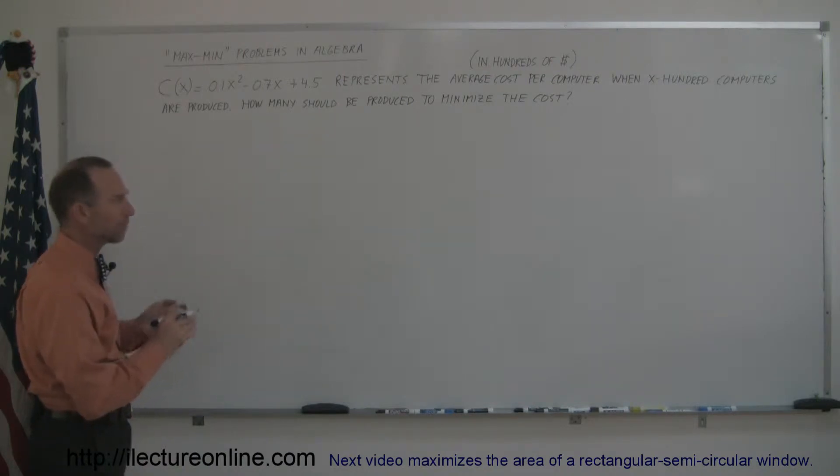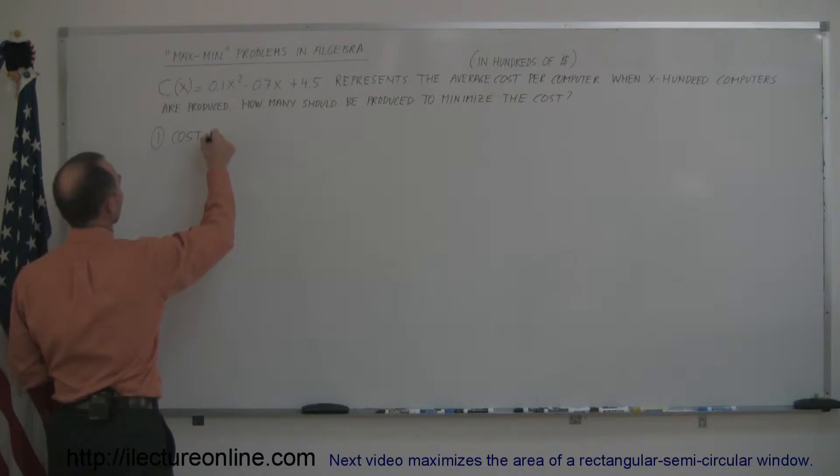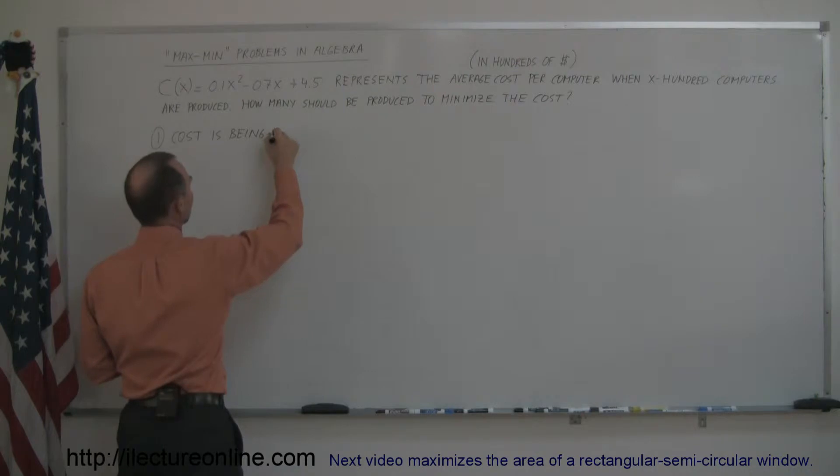So typically we have to come up with the equation ourselves, but here they actually give us an equation, and they tell us to minimize or find the minimum cost. So typically we would have to decide what's being minimized, and cost is being minimized. So always determine what's being maximized and minimized.